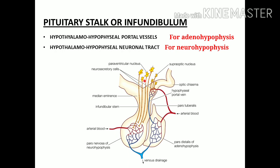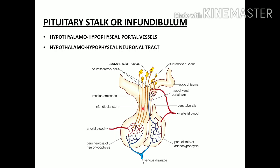The hypothalamo-hypophysial neuronal tract consists of bundles of axons. The soma or cell bodies of these neurons are located in the supraoptic and paraventricular nuclei of the hypothalamus, but their processes pass through the pituitary stalk downwards to reach the posterior pituitary. The hormones of the posterior pituitary — oxytocin and vasopressin — pass through this neuronal tract.